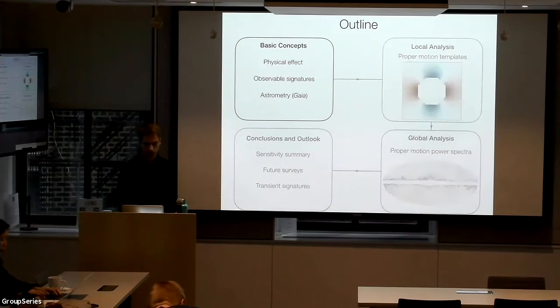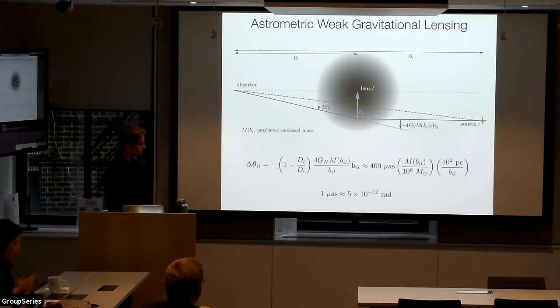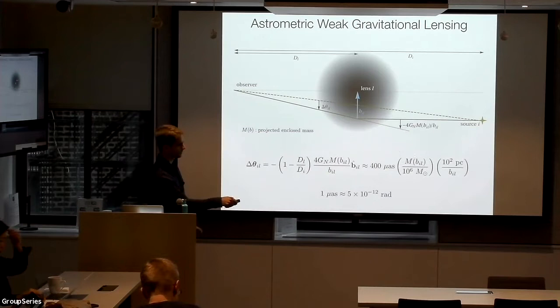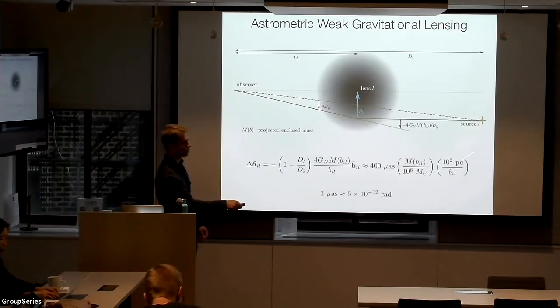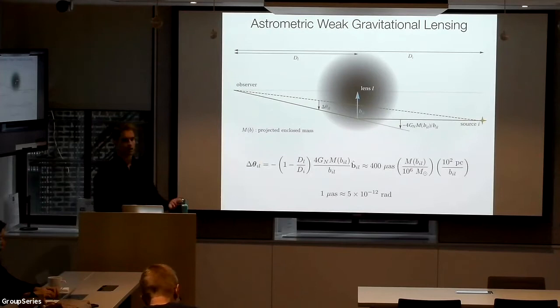What's the basic physical effect? Suppose we have a source that we're observing, whose light path is slightly deflected by a lens L with impact parameter B. The lensing deflection is of order 4GM/B. For a cold dark matter subhalo of a million solar masses, expected to contain no baryons and be about 100 parsecs in size, if the impact parameter is of order the size, the angular deflection would be about 400 microarcseconds — bigger than the typical light centroid uncertainty in the Gaia survey.